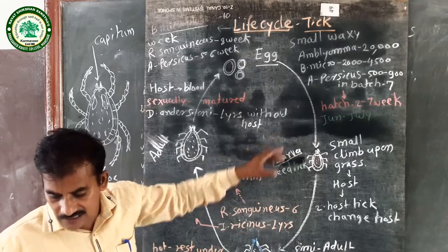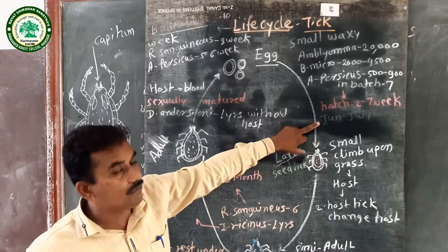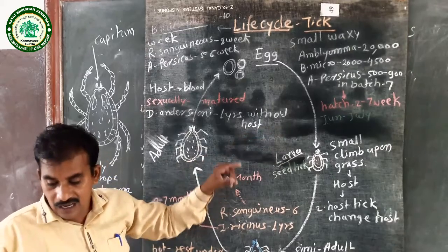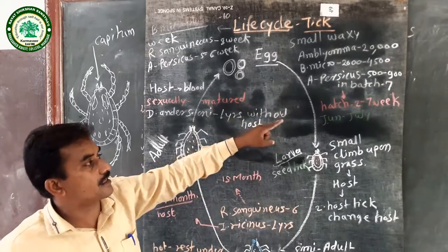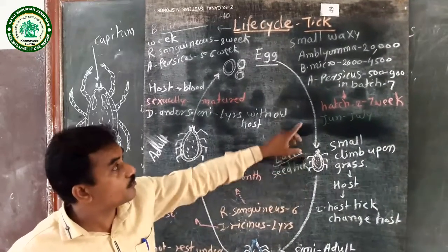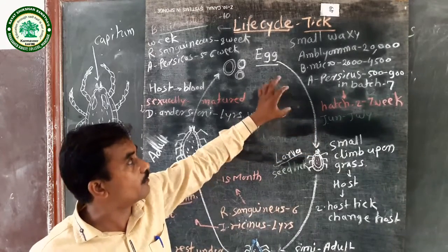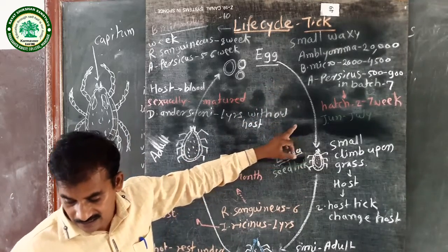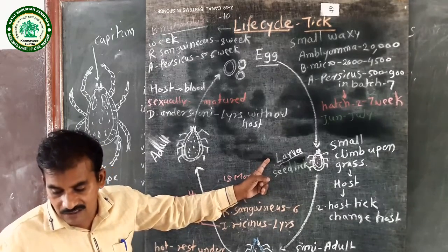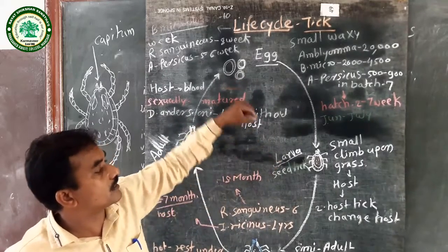Eggs are released starting from the month of June to July. The embryonic development depends on temperature — if the temperature is higher, development is faster. Higher temperature is the most favorable condition for the incubation of tick eggs. When eggs hatch, they produce young ones called larvae, also known as seed ticks. The larvae burst out of the shell as small active individuals.